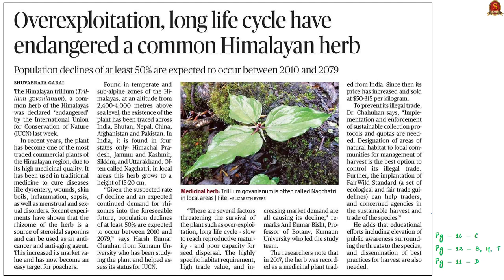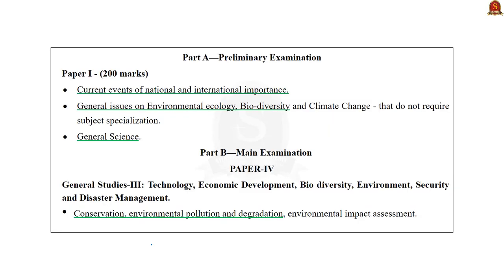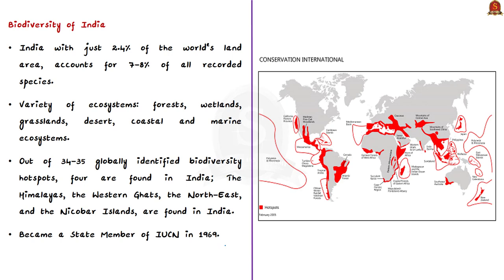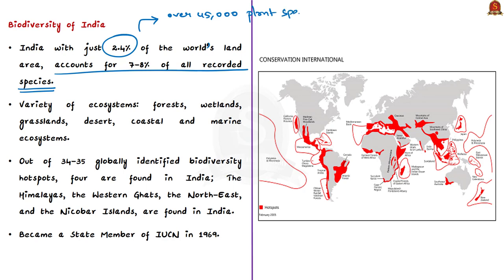This news article states that IUCN has recently declared the Himalayan trillium as endangered. The population of this common herb is expected to decline by at least 50 percent between 2010 and 2079. In this context let us discuss the Himalayan trillium and the reasons for its decline. India has 2.4 percent of the world's land area but accounts for seven to eight percent of all recorded species, including more than 45,000 species of plants and more than 91,000 species of animals.